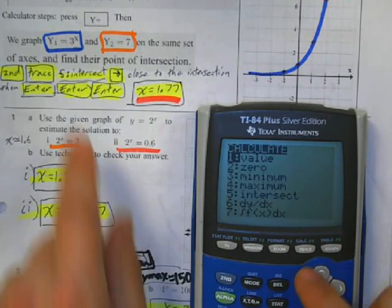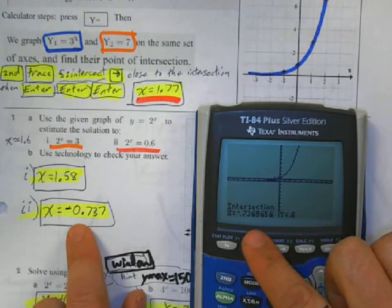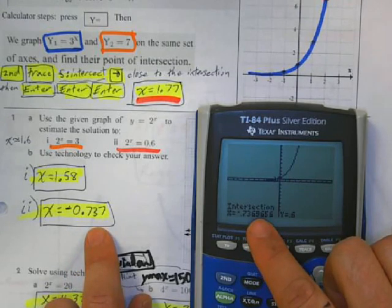Second trace, 5 for intersect. Enter, enter, enter. And tells my intersection is negative 0.737. Be careful with your rounding.